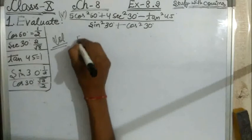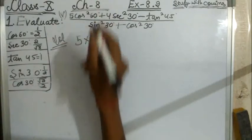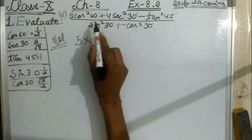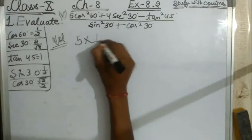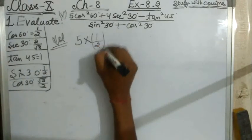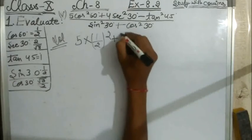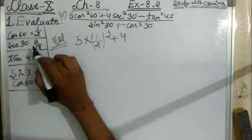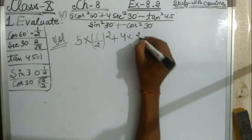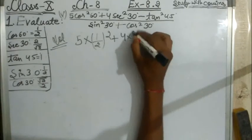5 into cos square 60 degree, so cos 60° is 1/2 squared, plus 4 cosec 30°, which is 2/√3 into 2/√3 squared.